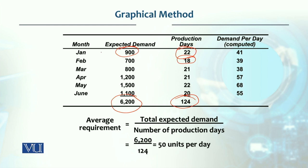For January, the demand of 900 is divided by 22 working days to calculate the daily demand. Similarly, the daily demand for each month is calculated in the same way.